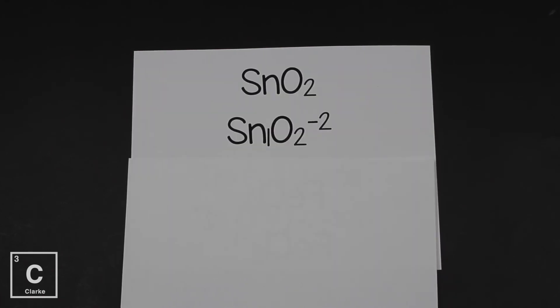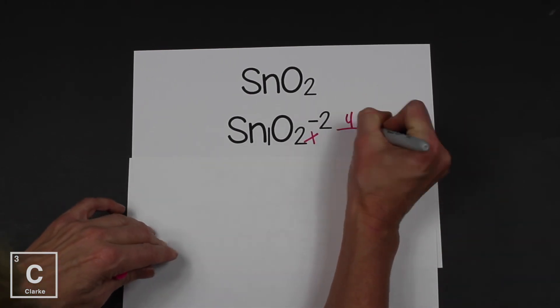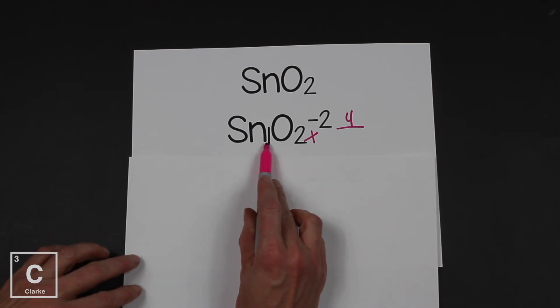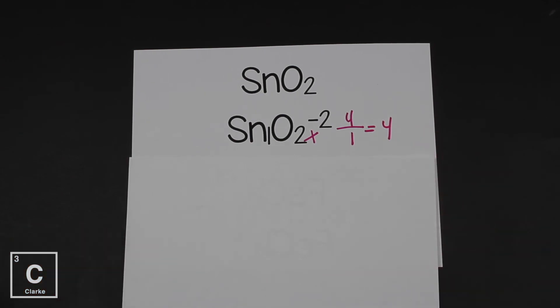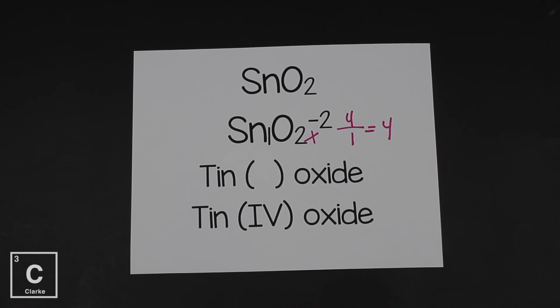Now we always know what the charge of the nonmetal is going to be and oxygen is always a negative two. So let's try our shortcut one more time. Because if you uncrisscross, that means tin is a two. But that's not the right answer. So let's see. Two times two is four divided by one, still a four. So if we prep this name, we've got tin. We know we're going to need a Roman numeral, oxide. And the Roman numeral that we're going to need is a four. Now if we would have just uncrisscrossed, we would have used a two and we would have been wrong. That's why the multiply and divide shortcut always works a hundred percent of the time.